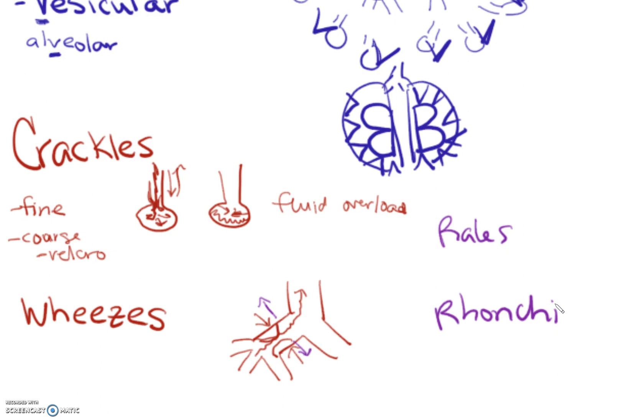Rales are crackles—just another name for them because in medicine we like to call things by multiple names. Rales are the same as crackles. They can be fine or coarse and are usually associated with alveoli popping open, like with fluid overload, mucus congestion, or pneumonia. The trick is that rales starts with R-A and crackles has R-A in it.